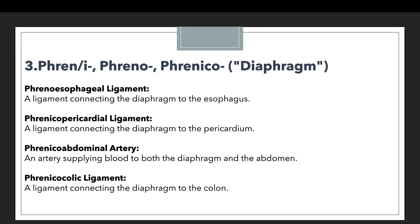The phreno-esophageal ligament is a complete terminology initiated with the prefix phreno. Then we have the phreno-pericardial ligament, which means a ligament connecting the diaphragm to the pericardium. In the first example we are talking about the ligament connecting the diaphragm to the esophagus, and in the second, the ligament connecting the diaphragm to the pericardium. The third example is the phrenoabdominal artery, which means an artery supplying blood to both the diaphragm and the abdomen.